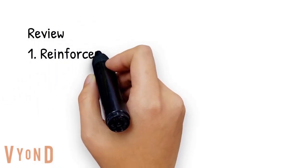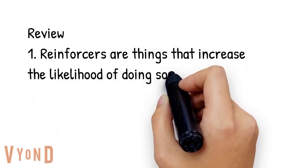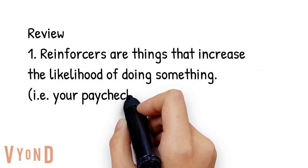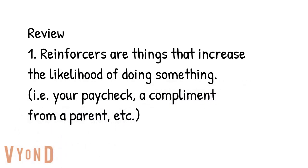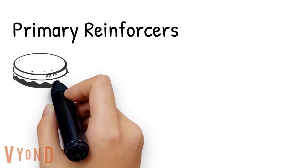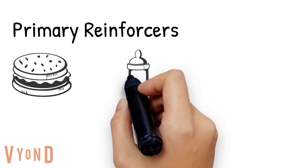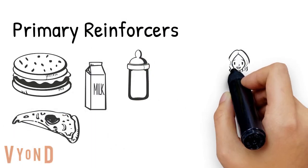So in review, reinforcers are things that increase the likelihood of you doing something. For example, your paycheck increases the likelihood that you're going to continue to go to work. If you stop getting your paycheck, you probably might stop going to work. And a parent complimenting their kid for good behavior is another example. Primary reinforcers are anything that serves a basic biological need, such as food, drink, or physical attraction.